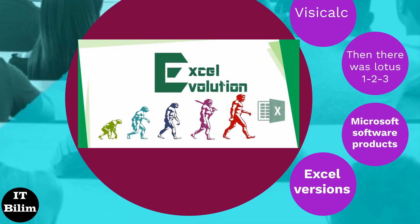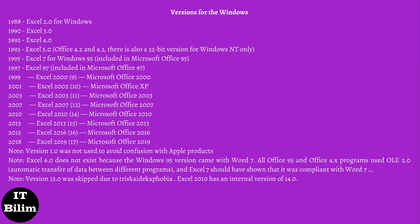Excel versions for Windows. The original version of Excel for Windows, Excel 2, appeared in 1988. This version was called Excel 2 because the first version was developed for the Macintosh. At the time, Windows was not yet widespread. Therefore, Excel came with an operational version of Windows — an operating system that had the functionality to run Excel. This version of Excel seems incomplete by today's standards.